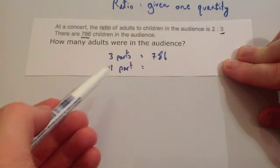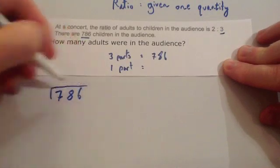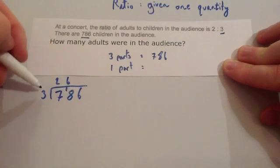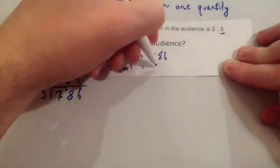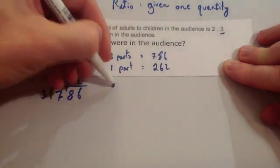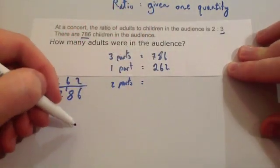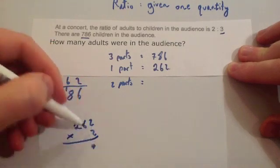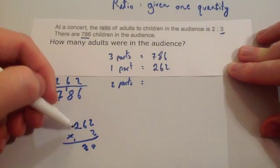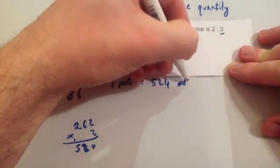Divide 786 by three to find one part. Using the bus shelter method: three into seven goes twice remainder one, three into 18 goes six times, three into six goes twice. So one part is 262. Adults is the two-part, so times by two: 262 times two — two times two is four, carry the one, two times two is four plus one is five — giving 524 adults.